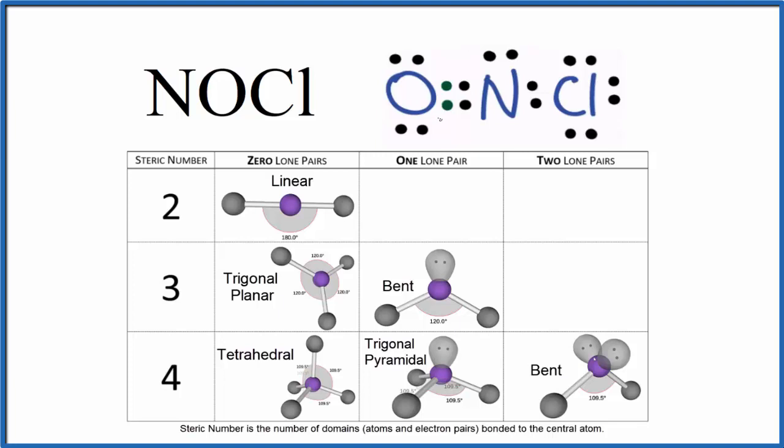So when we look at our Lewis structure we can use this table here with steric number to figure out the molecular geometry. We're looking at how many things are attached to the central nitrogen. We have two atoms and one lone pair. So our steric number is three and we have one lone pair. If we go over we see we have a bent molecular geometry with a bond angle of about 120 degrees. It won't be exact, these are general numbers. For this compound this bond angle is 113 degrees.